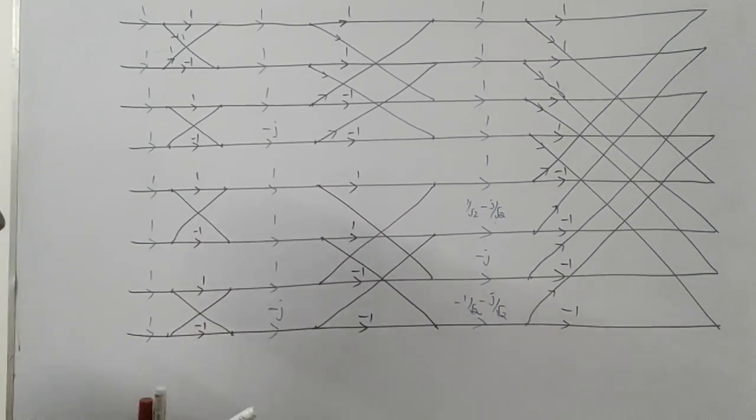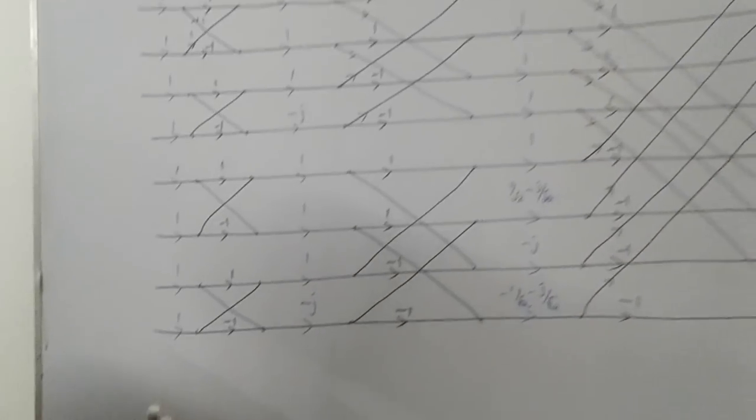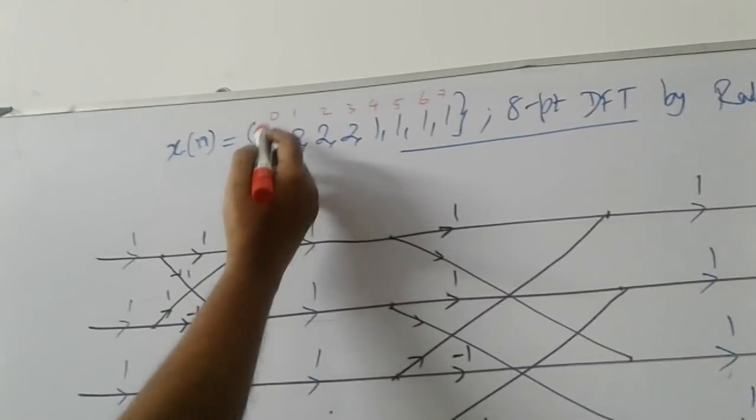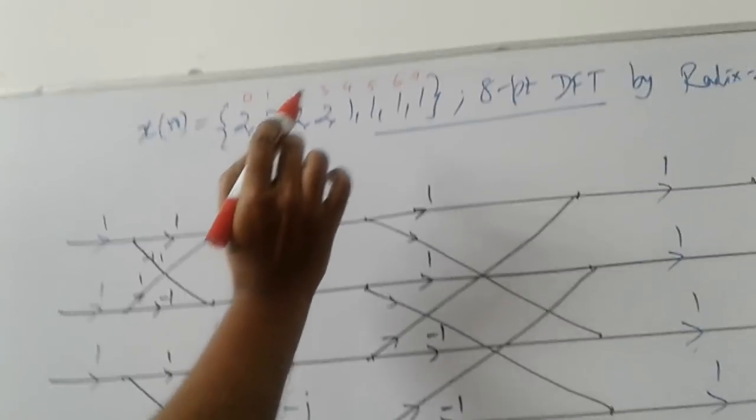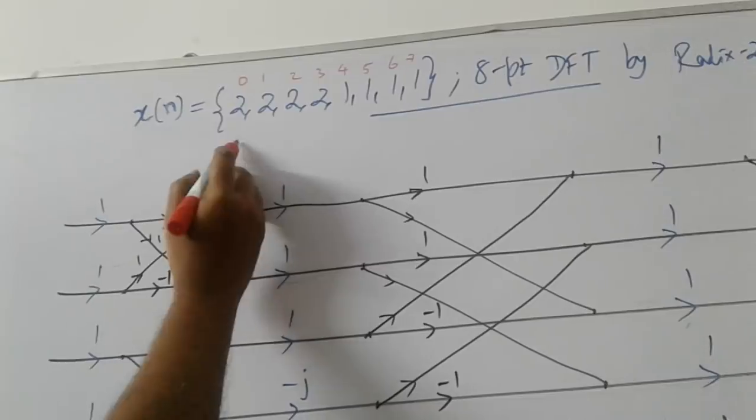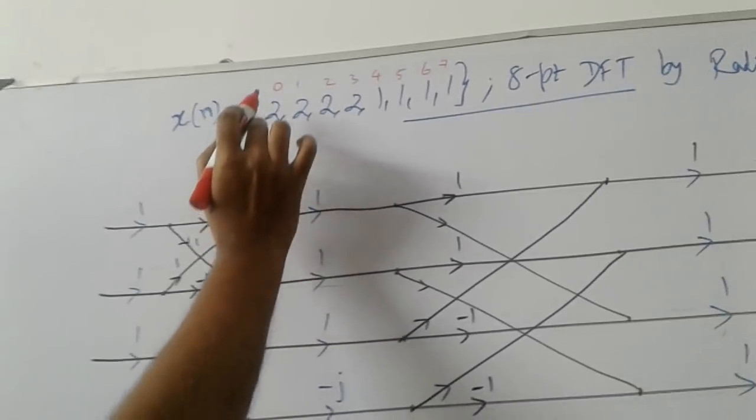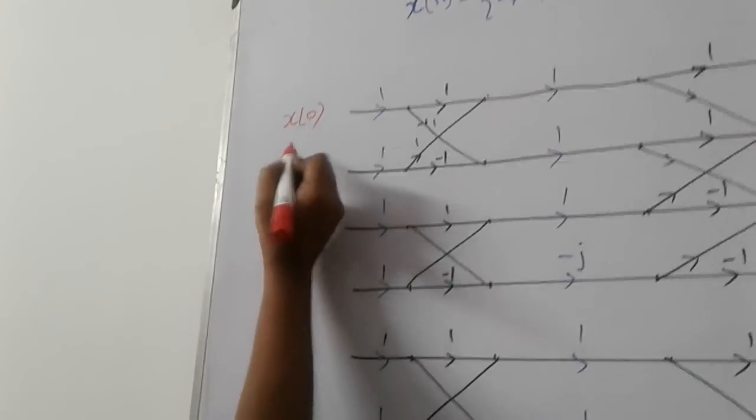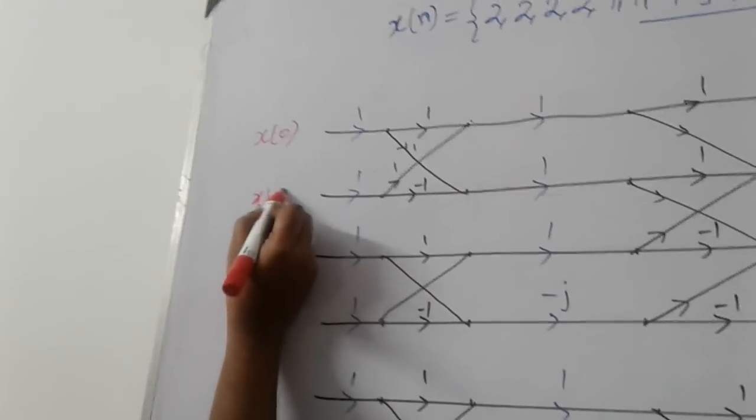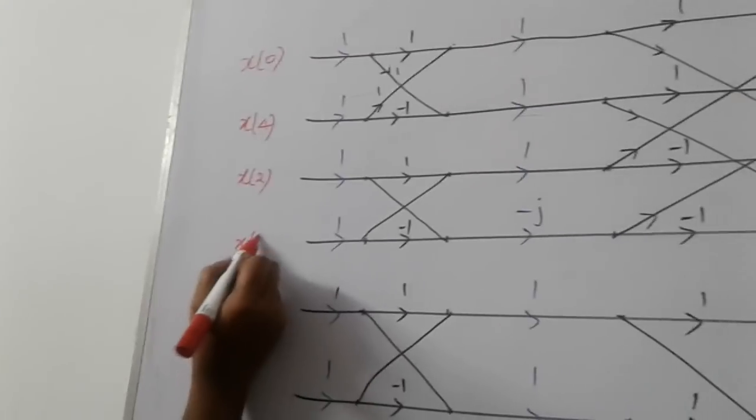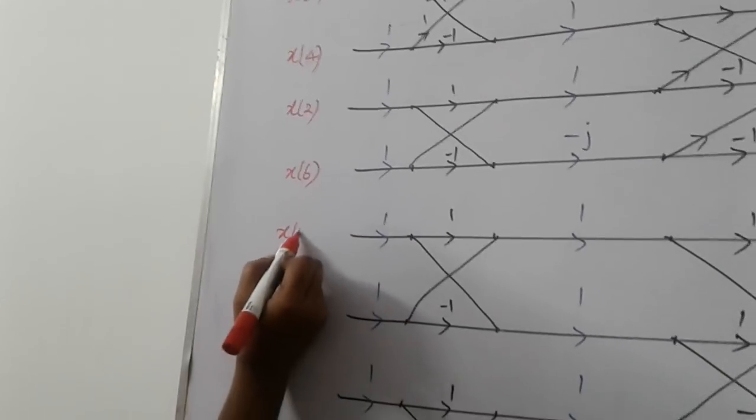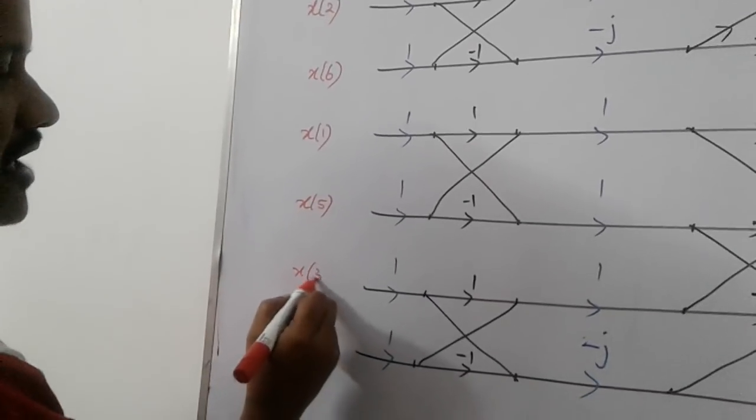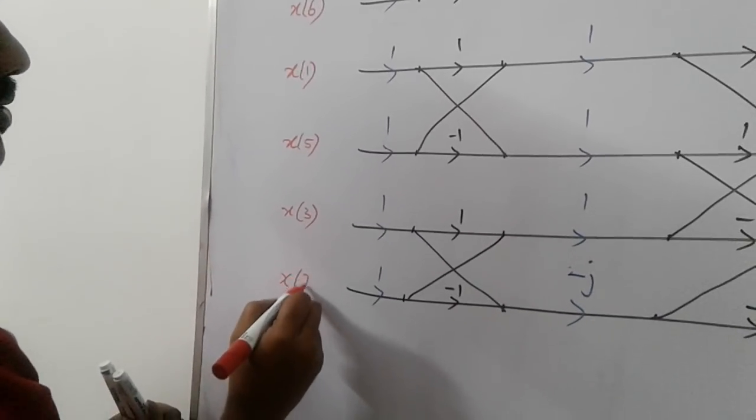Then for the second stage. Then for the third stage. It is 1, 1 by root 2 minus j by root 2, this is minus j, minus 1 by root 2 minus j by root 2. So this is the template for decimation in time. This template is common for all the decimation in time problems.